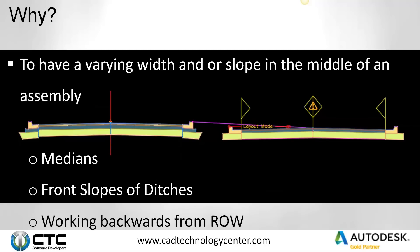So why do we want to use mark points and link to mark points? Basically, to have a varying width or slope in the middle of an assembly is the main reason why. In my little picture here, I have a southbound line and a northbound line. I want my center line to hold for southbound and I want my center line to hold for my northbound, but I need to have the two back of curbs connect. I can't build an assembly that will start at the top back of curbs and then go at five feet at a 2% to the other back of curbs, because with the center lines being independent of each other, those top back of curbs are also going to be independent. So what we need to do is put that mark point in.